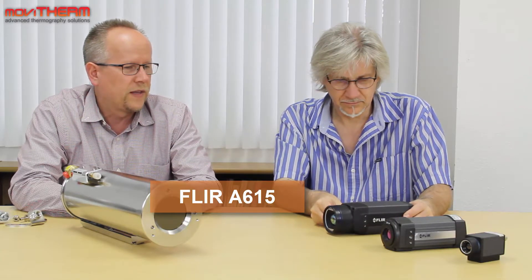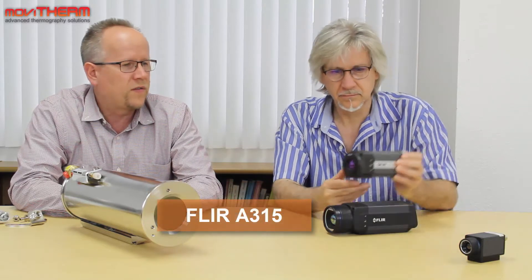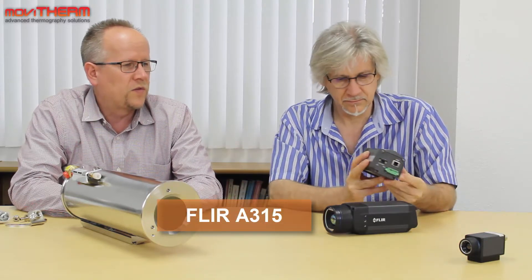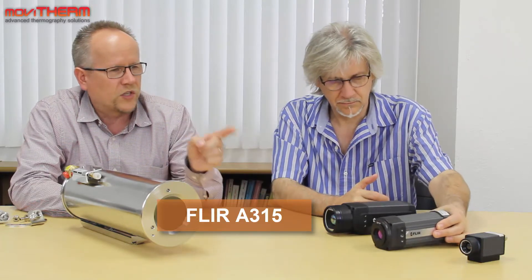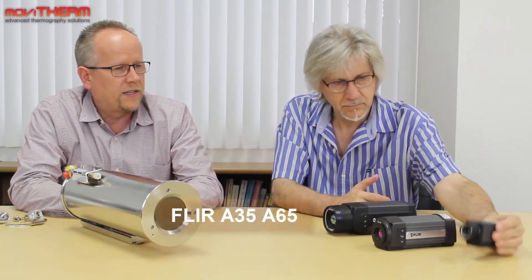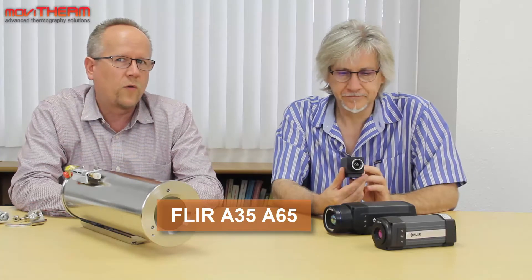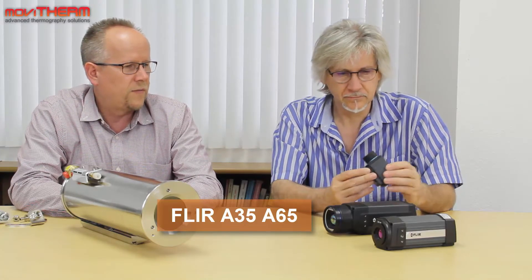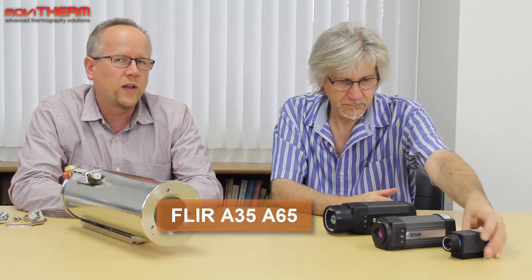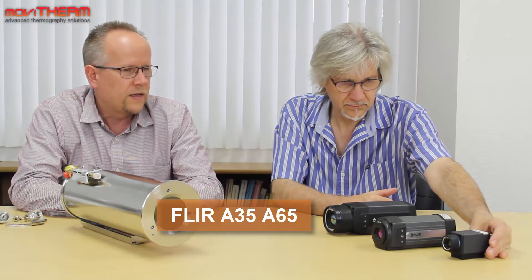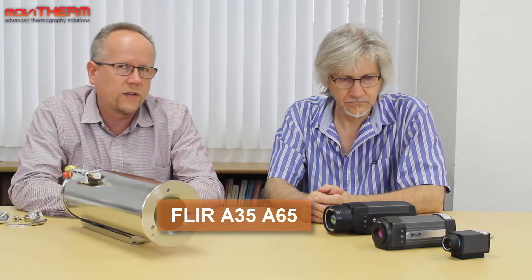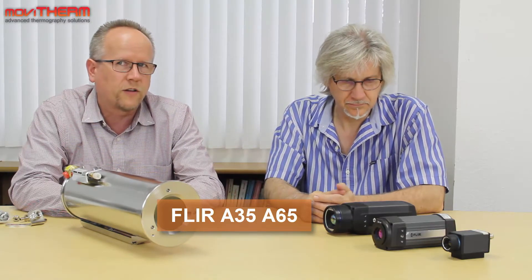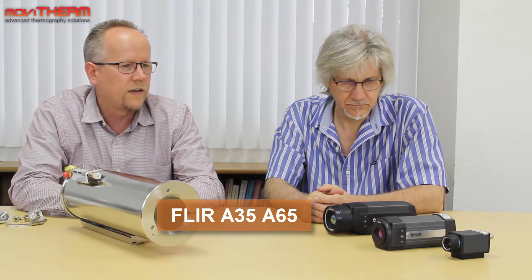Then we have the a315, 320 by 240 pixels, about a $10,000 camera, and then we have this small guy, either an a35 or an a65. The 35 is 320 by 240, the 65 is 640 by 512, and they cost about five to eight thousand dollars depending on model and lens option.